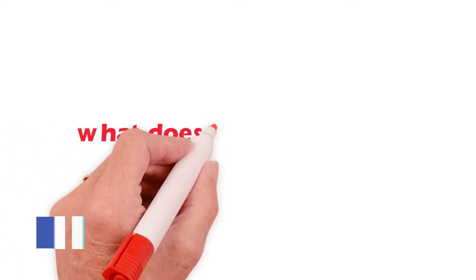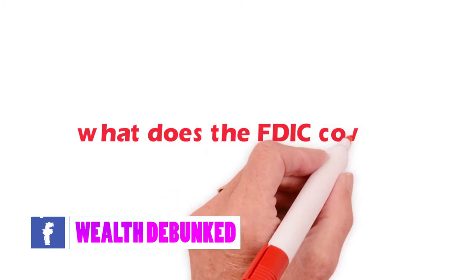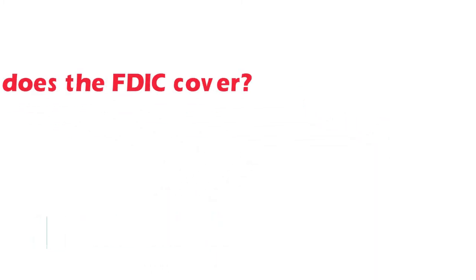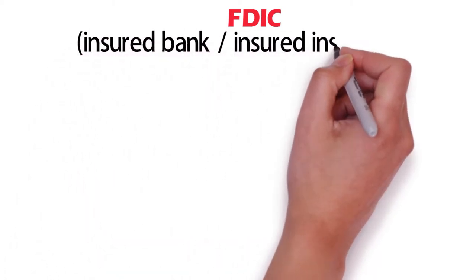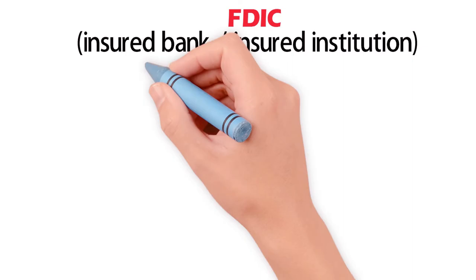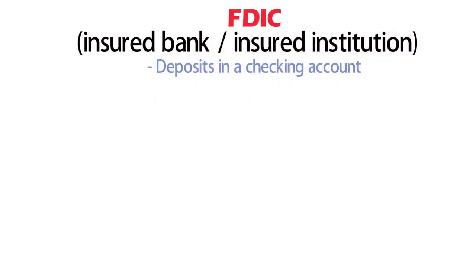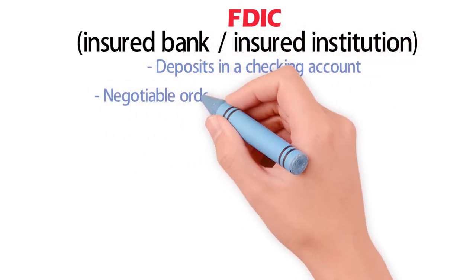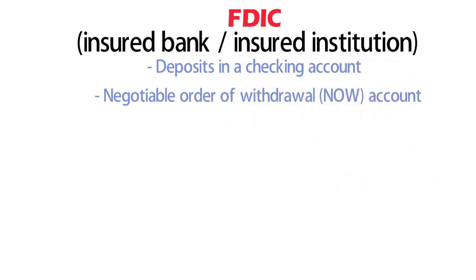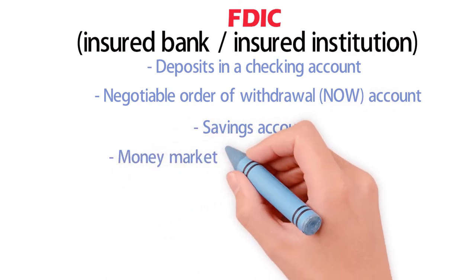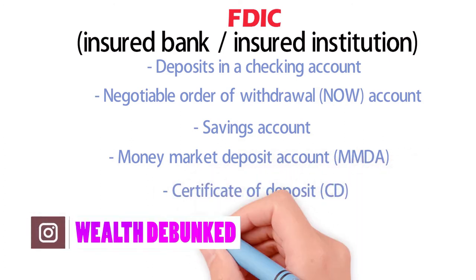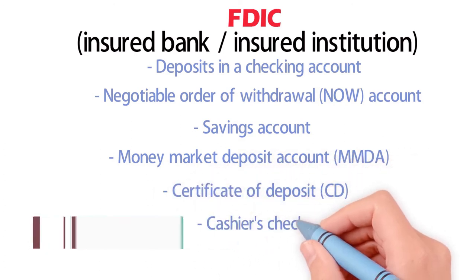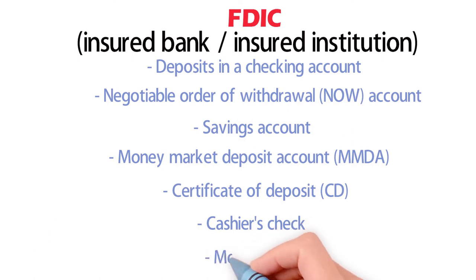What does the FDIC cover? FDIC insurance covers several types of deposits received at an insured bank or insured institution, including deposits in a checking account, negotiable order of withdrawal account, savings account, money market deposit account, time deposits such as a certificate of deposit, and official items issued by a bank such as a cashier's check or money order.